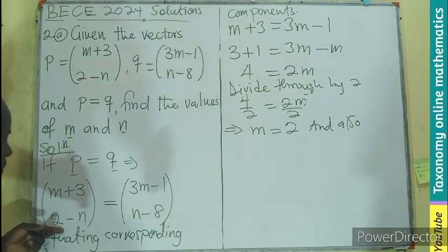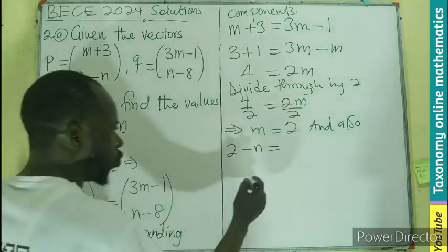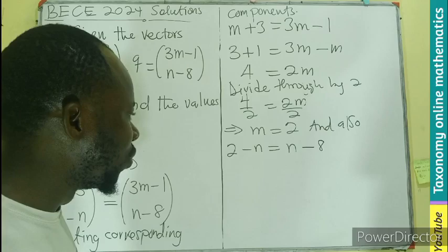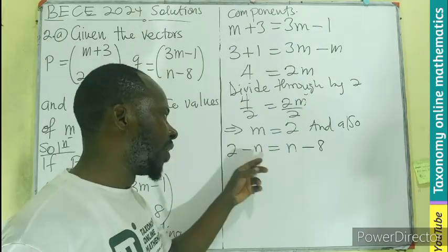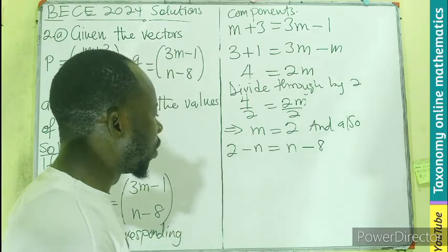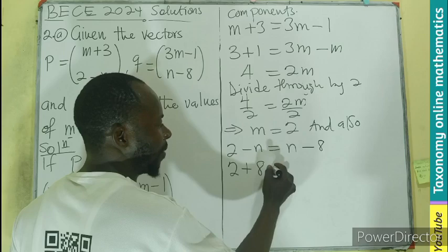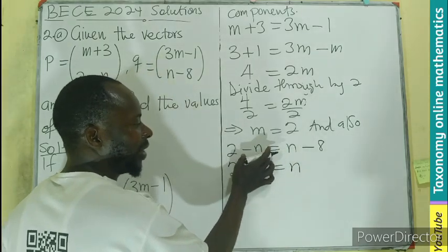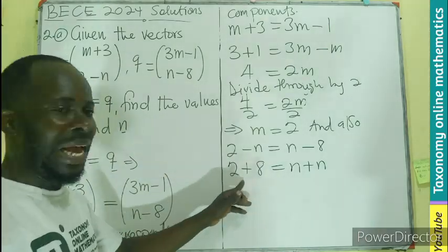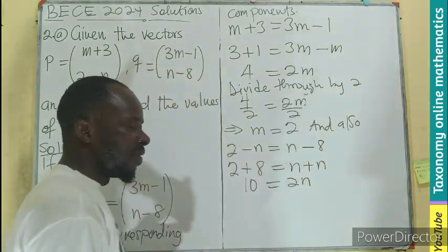And also, we are going to equate the Y component, which is 2 minus N in the left equals to N minus 8 at the right. Alright, what do we do? Here also I see a negative, so I can transfer it to the other side, bring a negative to come towards the 2. Meaning 2 will stay, negative 8 becomes positive 8 at the left.